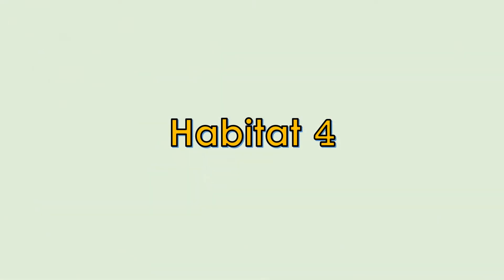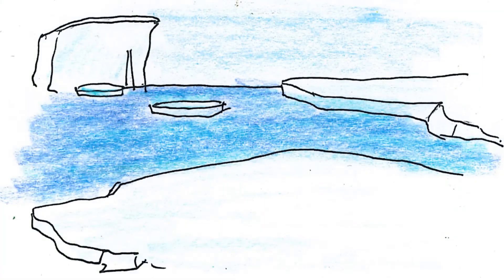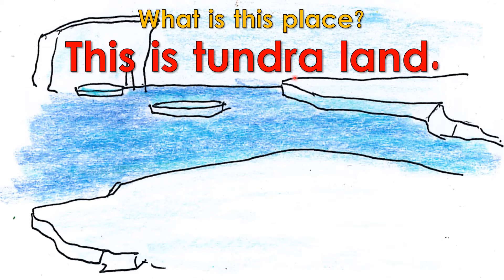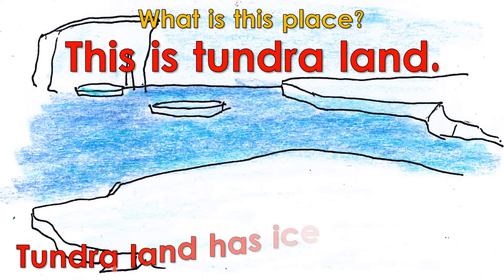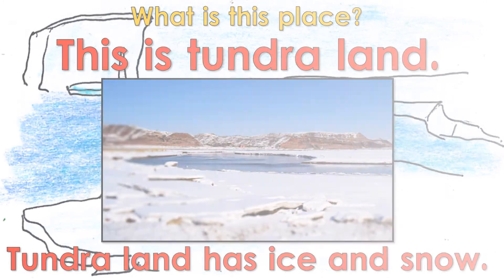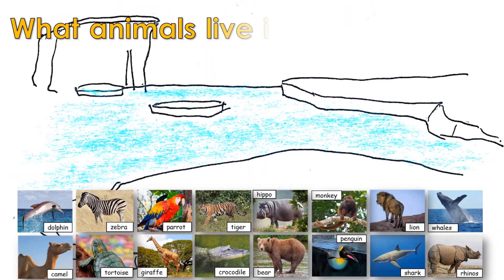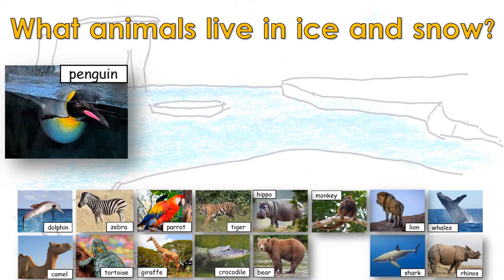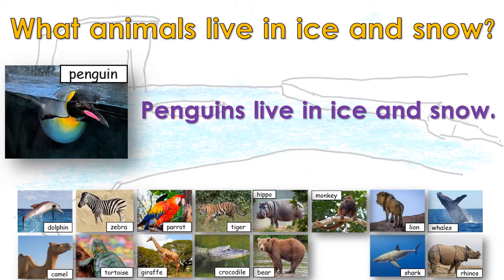Habitat 4. What is this place? This is tundraland. Tundraland has ice and snow. What animals live in ice and snow? Penguins live in ice and snow.